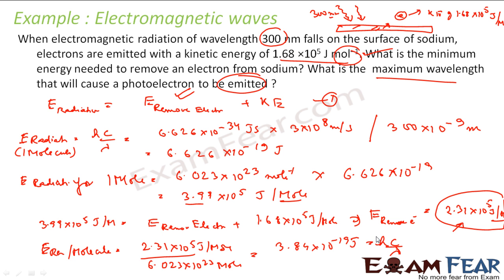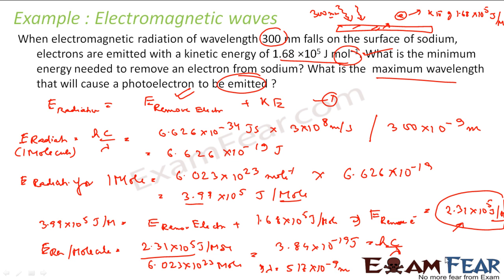This energy will come from the formula E = hc/λ, since we want to find the wavelength which can give this energy. Using h = 6.626 × 10⁻³⁴ J·s and c = 3 × 10⁸ m/s, we solve for λ and get λ = 517 × 10⁻⁹ m, which is 517 nanometers. That is λ_max.